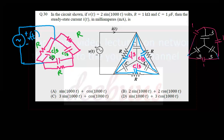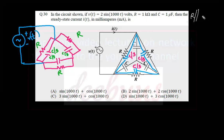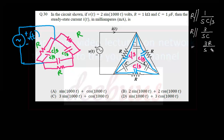First of all, we have to calculate what is R parallel with C/3. We are calculating R parallel with the impedance of the capacitance, that is R parallel with XC. XC equals 1 by S(C/3). As the capacitance value is divided by 3, R parallel with 1 by S(C/3), that is R parallel with 3/SC. Taking the parallel combination: 3R/SC divided by SCR plus 3/SC. Cancelling, we obtain 3R divided by 3 plus SCR.